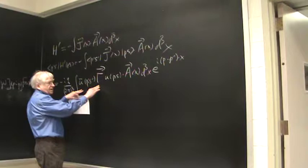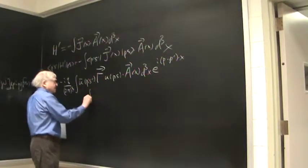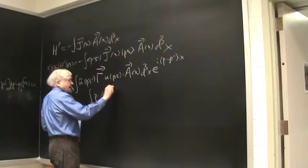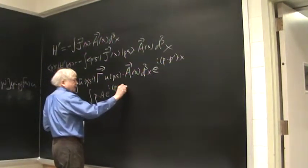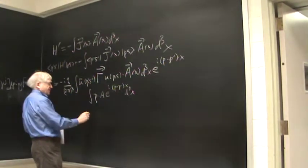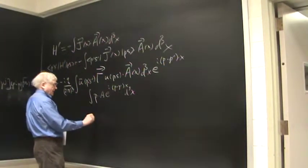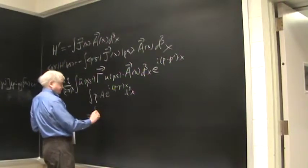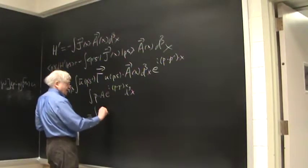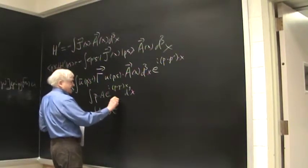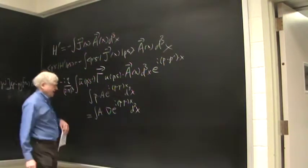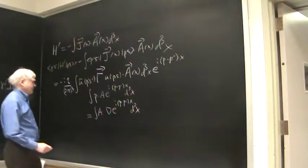suppose we have integral p dot a e to the i p minus p prime x d cubed x. Of course, this thing is the same thing as a dot grad e to the i p minus p prime x d cubed x, except for a minus i, I guess.